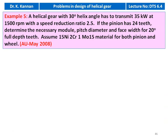Example number 5 from the May 2008 question paper: A helical gear with a 30 degree helix angle has to transmit 35 kilowatt at 1500 rpm with a speed reduction ratio of 2.5. If the pinion has 24 teeth, determine the necessary module, pitch diameter, and face width for 20 degree full depth teeth. Assume 15Ni2Cr1Mo15 material for both pinion and wheel.